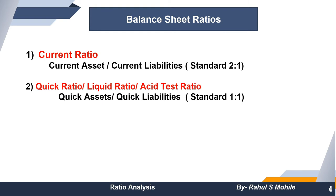The second ratio is very important because it is related to current ratio. It is called quick ratio, liquid ratio, or acid test ratio — remember all three names. The formula is quick assets divided by quick liabilities. The standard for this ratio is 1:1 — it should be at minimum one is to one and should not go below that.